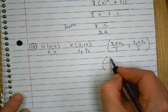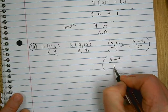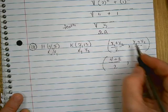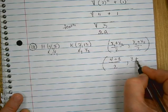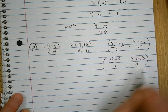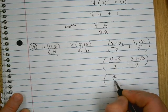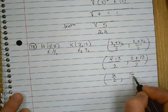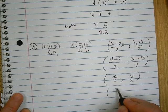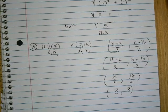4 plus 2 over 2, and y which is 3, plus y sub 2 which is 13, over 2. So I have 6 over 2 and 16 over 2, which is 3, 8. That's my midpoint. Any questions on number 18?